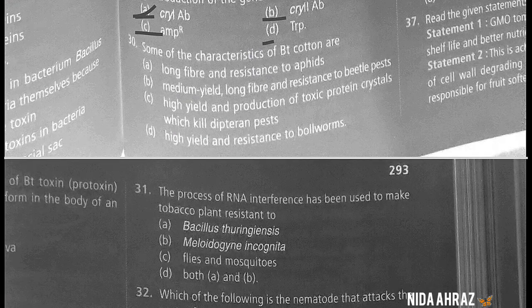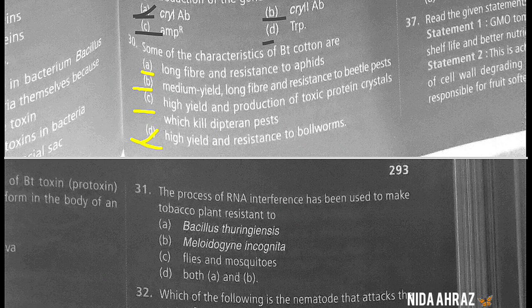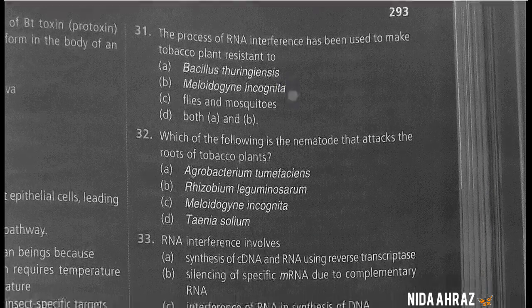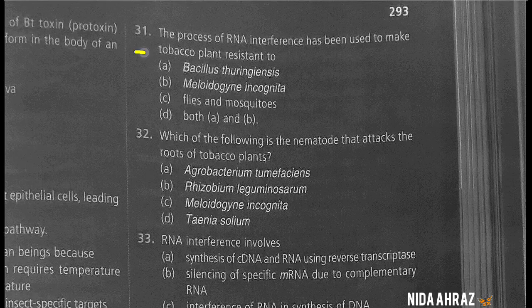Some of the characteristics of Bt cotton are high yield and resistance to bollworms. So the correct choice is option D.